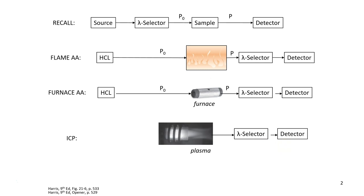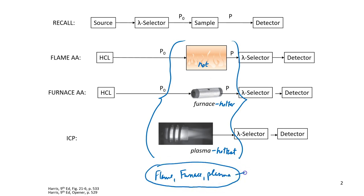So you probably realize that the flame is hot. The furnace, in most cases, is even hotter. And the plasma is the hottest. So, what is the function of all of this heat in the flame, furnace, and ICP? The flame, furnace, and plasma in an ICP, they are all atomizers.